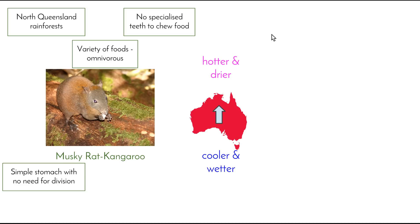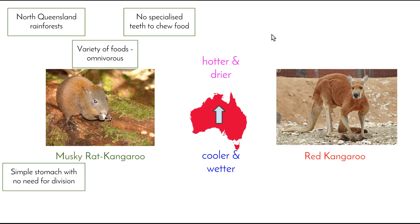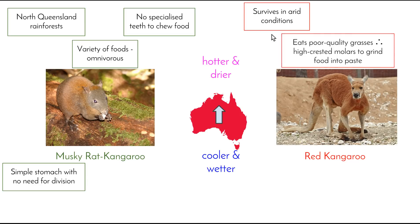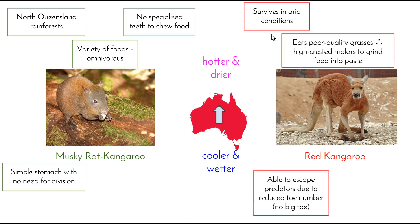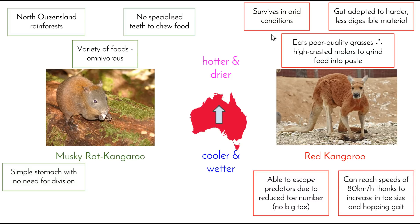As the Australian plate has drifted north, aridity has increased, and the evolution of kangaroos has been dictated by this increasing aridity. Kangaroos that survived these more arid conditions — eating poor quality grasses and escaping predators in more open areas — were favoured by natural selection. Grasses are poor quality foods, and kangaroos such as the red kangaroo have high-crested molar teeth to grind their food into a paste, and a gut adapted to harder, less digestible material. Red kangaroos can attain speeds of 80 km/h over short distances, made possible by a reduction in the number of toes — they have no big toe — an increase in toe size, and a hopping gait.